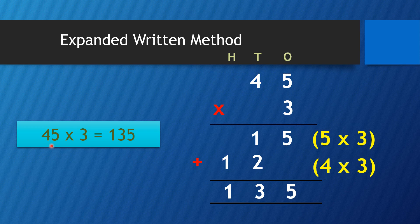Same question: 45 times 3. Very simple — settle the ones first. This is the ones, this is the question. What is 5 times 3? On this row, you will write only the answer for 5 times 3. Five times 3 is 15, so just write 15 like this. Always remember: in 15, 5 is the ones and 1 is the tens. This row is for 5 times 3.